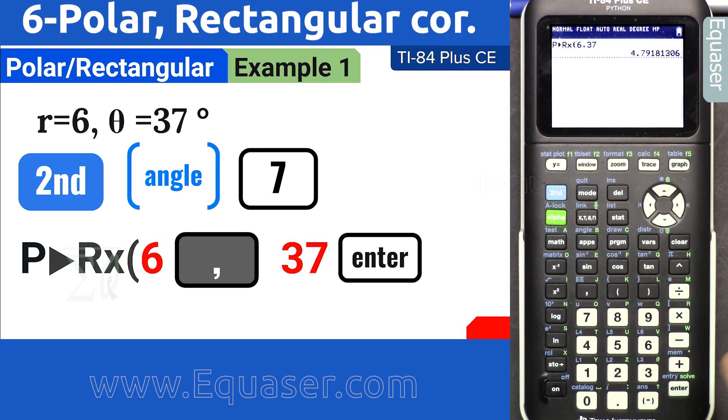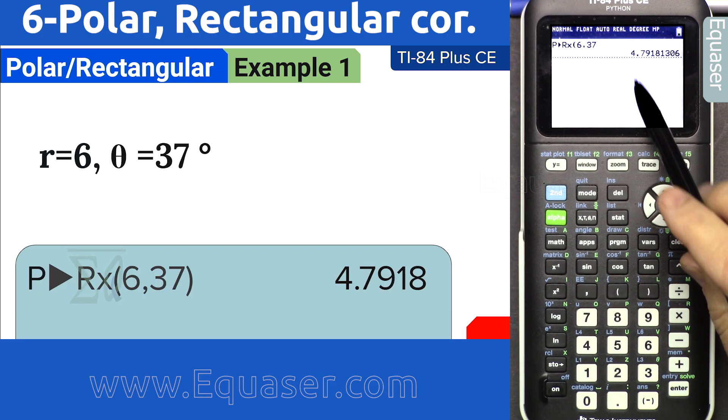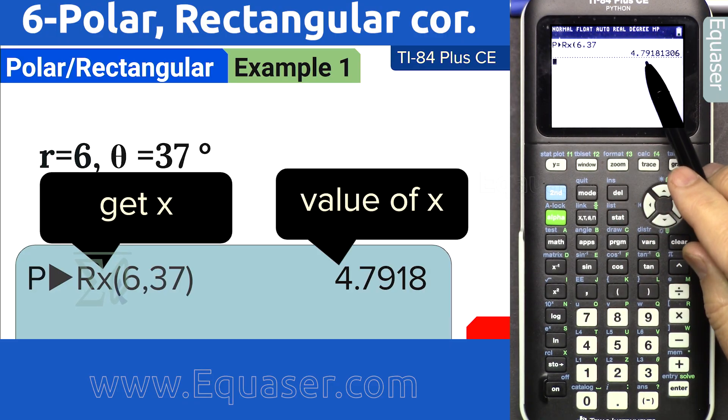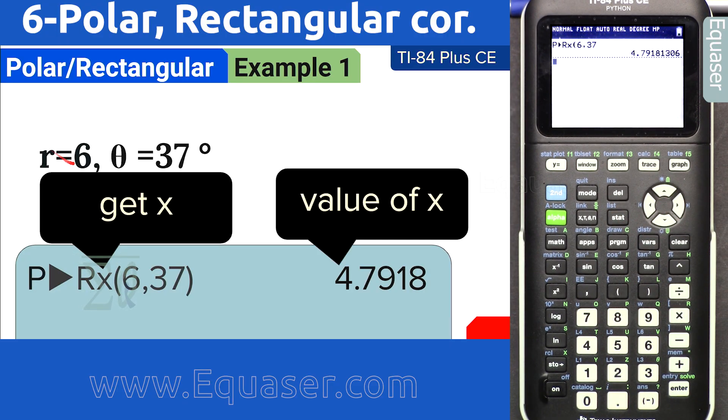Press enter, and now this says get x, and this is our x value. We entered r and theta. This is polar and we got rectangular value for x.